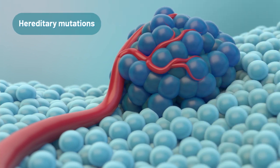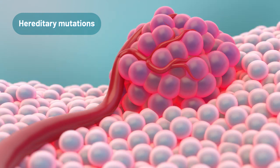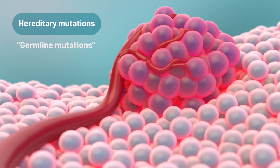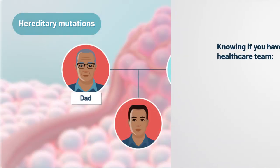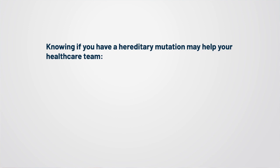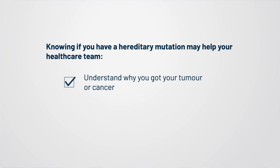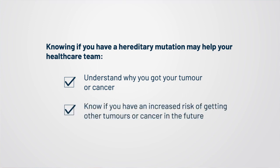Hereditary mutations are mutations found in the DNA of all the cells in the body, both tumor cells and healthy cells. These mutations you are born with. Hereditary mutations are also called germline mutations and can be passed down from parent to child. Knowing if you have a hereditary mutation may help your healthcare team understand why you got your tumor or cancer and know if you have an increased risk of getting other tumors or cancer in the future.